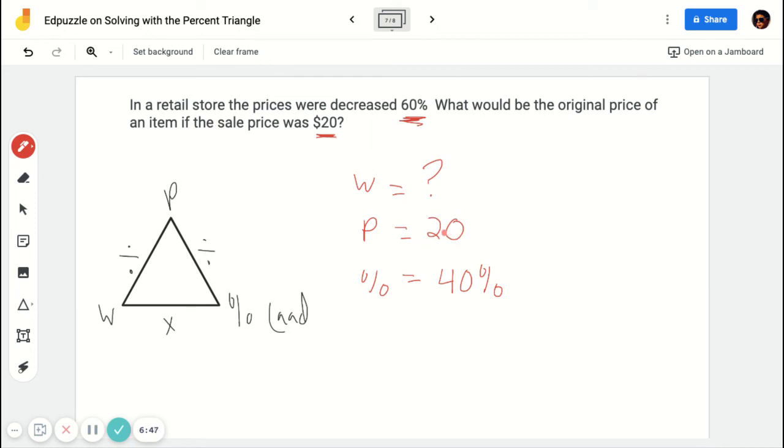So this represents 40%. So knowing that, I can say 20 goes here, 40% goes here, but that's really 0.4. So I'm going to do 20 divided by 0.4.